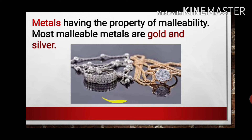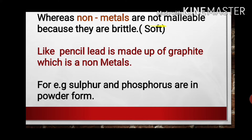Gold and silver jewelry are examples of metals, and we can change them into any desired shape because of the malleability property. Out of all metals, gold and silver are the most malleable metals. On the other side, non-metals have no property of malleability — non-metals are not malleable. The reason is that non-metals are very brittle and soft, so when beaten they convert into powder form and will never convert into thin sheets.